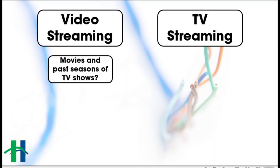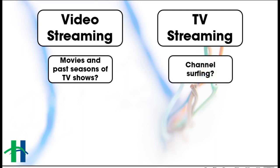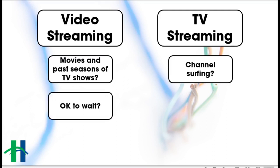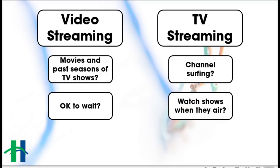Are you okay with watching movies that came out in the past or past seasons of TV shows? Are you trying to catch up? Or do you prefer channel surfing — having the TV on in the background, switching from channel to channel without necessarily picking one individual show? Then you would want TV streaming versus video streaming. If you're okay waiting for new content to be added, video streaming might be the best option for you. If you don't like spoilers and want to watch shows as soon as they air, you probably want a TV streaming option.